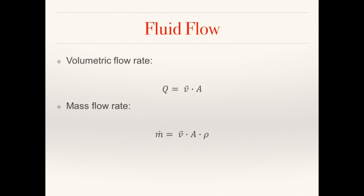We will now begin to look at fluid flow. There are two ways to assess the flow of a fluid. If we consider a uniform pipe, the volume of a fluid flowing through the pipe each second would be equal to the cross-sectional area of the pipe multiplied by the average velocity in meters per second of the fluid as it moves through the cross-sectional area. This value is called the volumetric flow rate. We can also calculate the mass of a fluid that flows through the same pipe every second using the mass flow rate.